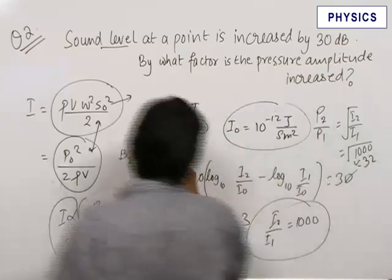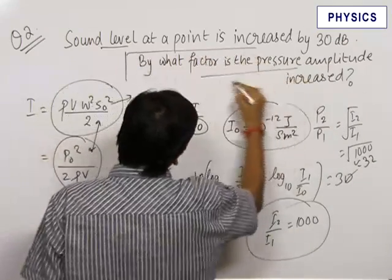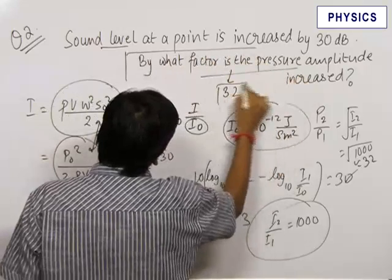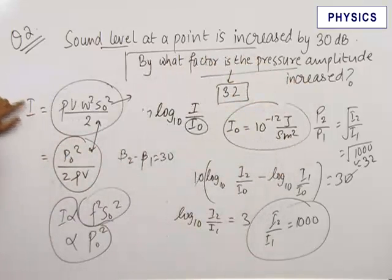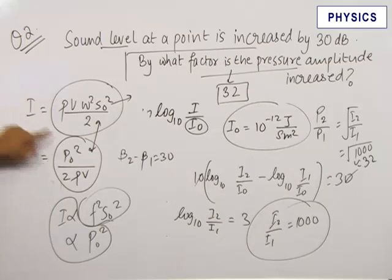Therefore, the final answer for the factor by which pressure amplitude is increased is 32. Remember these two formulas for the expression of intensity: I = ρvω²s₀²/2 and I = P₀²/(2ρv).